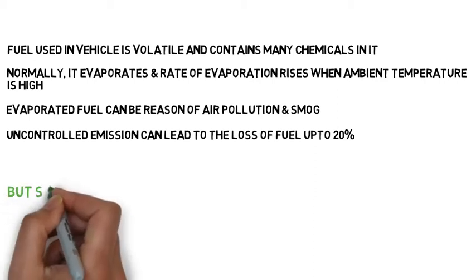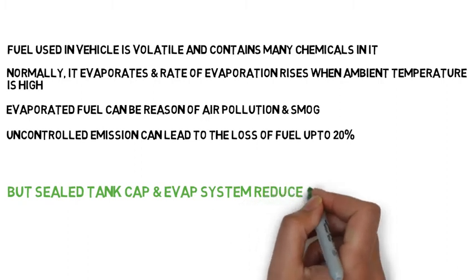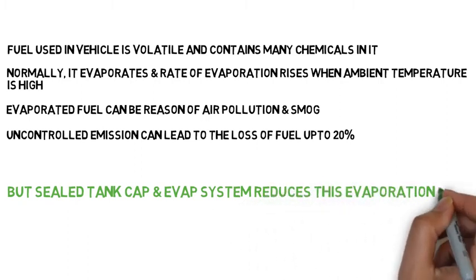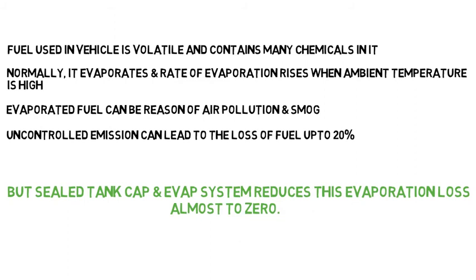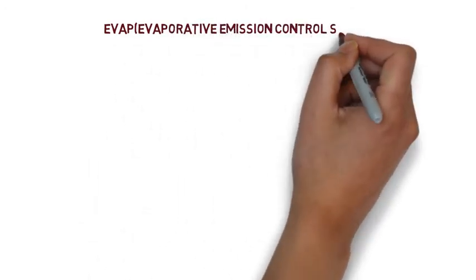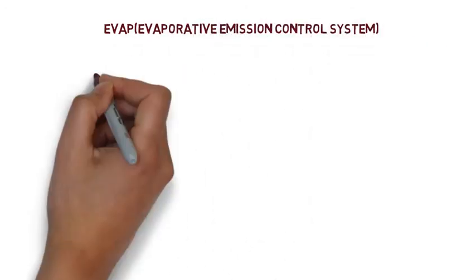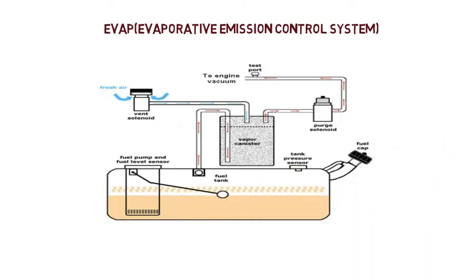So in all vehicles, a sealed tank cap and EVAP system is present which reduces evaporative losses almost to zero. Let's see what this EVAP system is. EVAP is the Evaporative Emission Control System. This EVAP system eliminates evaporative losses by sealing off the fuel storage system from the atmosphere.